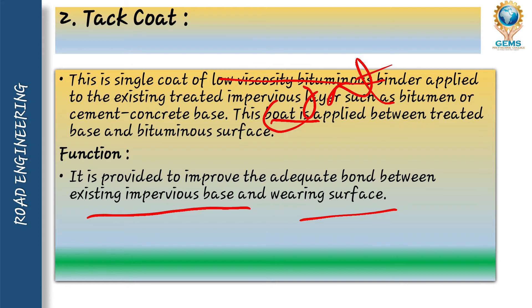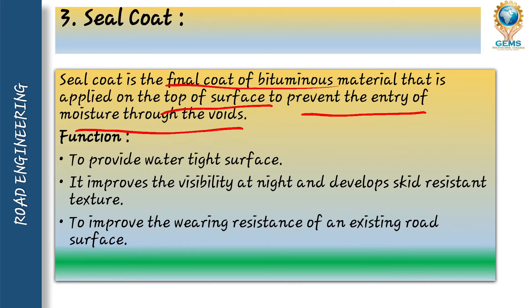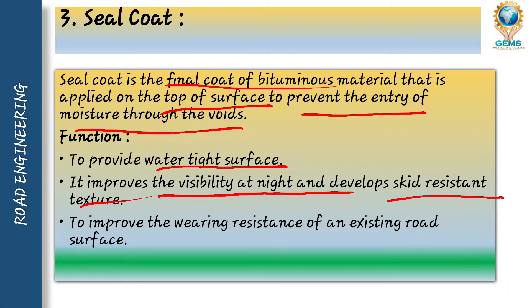The third one is seal coat. Seal coat is a final coat of bitumen material that is applied on the top of the surface to prevent the entry of moisture through voids. The important characteristic of seal coat is that it prevents the entry of moisture through voids. It is applied at the top of the surface and is the final coat of the bituminous material. The function of seal coat is to provide a watertight surface, improve visibility at night, display skid-resistant texture, and improve the wearing resistance of the existing road surface.